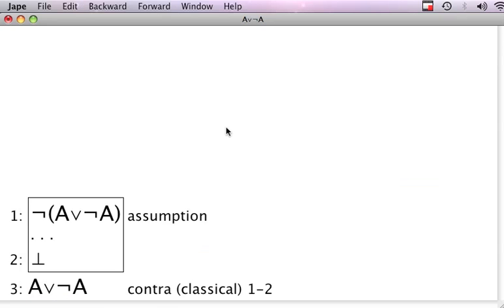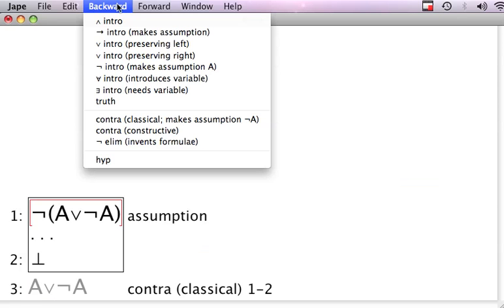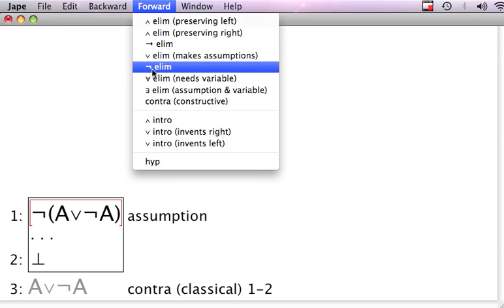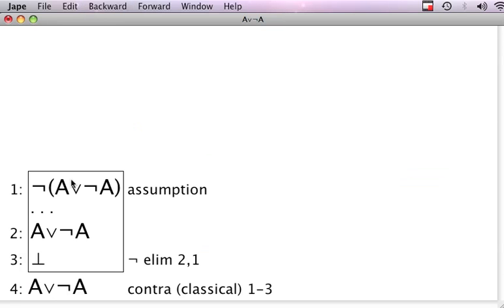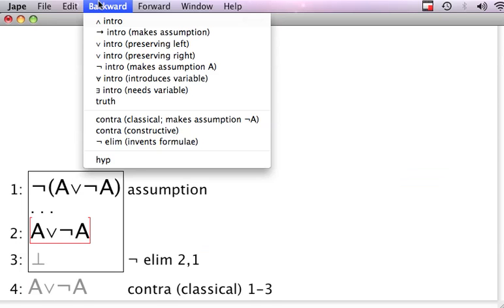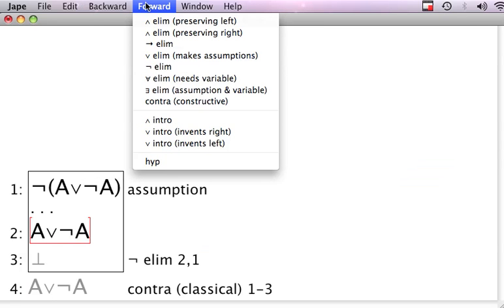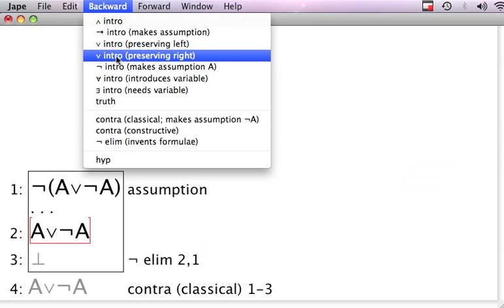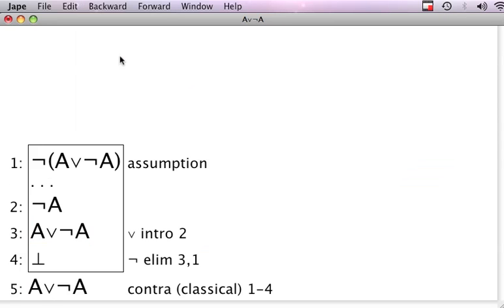Now, so if you do this, so far so good. And now we go forward and we do, let's see if you do a not elimination. Let's see if that works in JAPE. Yes, it did. So this was also how we did it by hand before. Now, we go backwards and do an or intro preserving right.